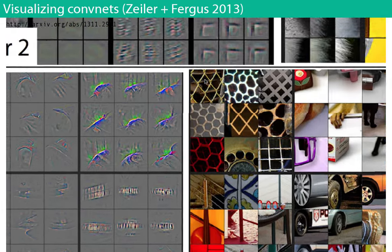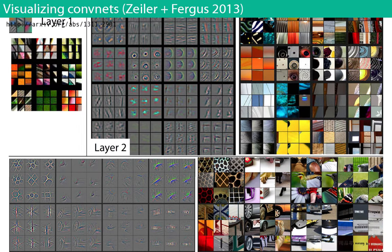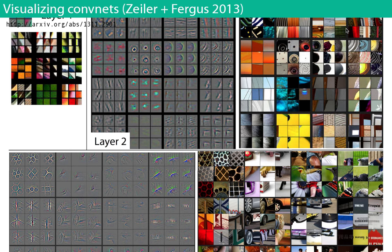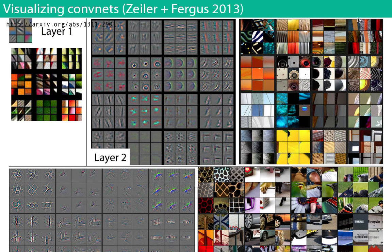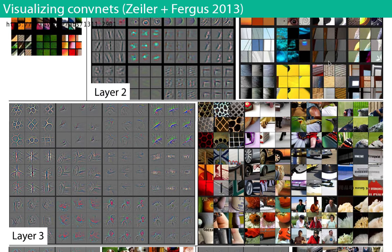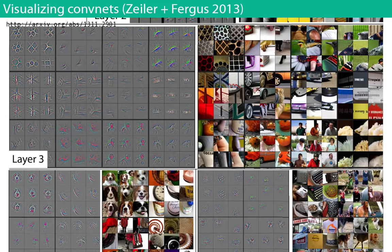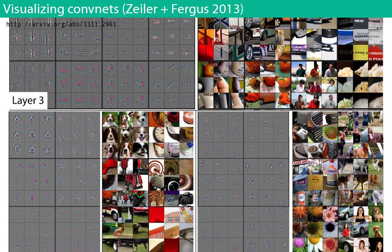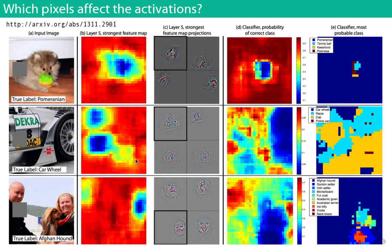We can visualize the weights and also understand activations by looking at which parts of the image were maximally activated by particular filters. In intermediary layers, neurons look for high-level concepts — one neuron here appears to be looking for car wheels, another for dog faces. We also looked at occlusion experiments: if we cover a Pomeranian's face, the classification confidence of it being a Pomeranian goes down.